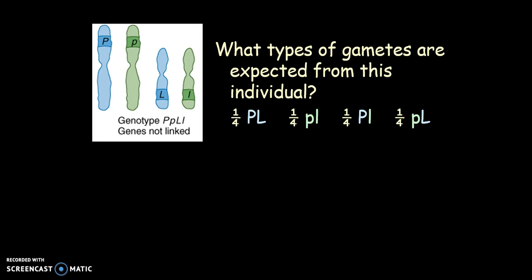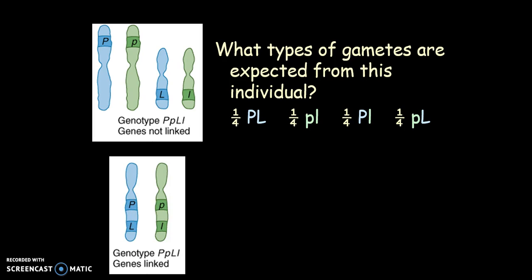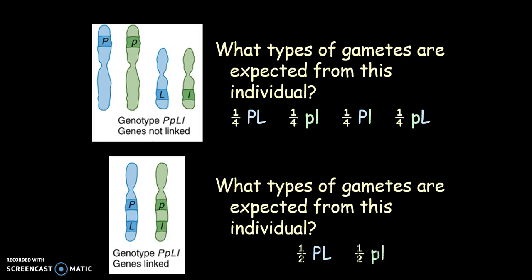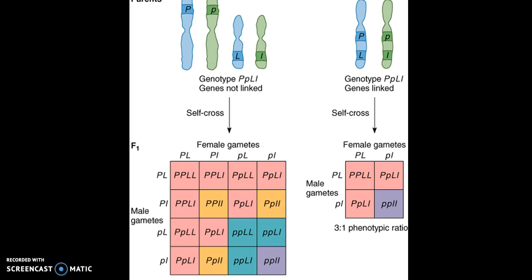When we do the Punnett squares for this, this is the outcome that would occur for these two types of gametes. Now when we do the dihybrid cross — when we have two different ones — we do see that if A and B genes are not linked, they assort independently into gametes during meiosis.